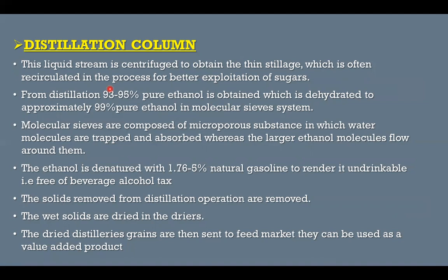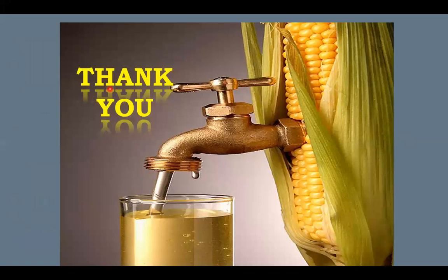This 99% pure ethanol is then denatured by adding denaturing chemicals like natural gasoline, etc., in an amount of 1.76 to 5%. The reason for adding denaturant is that after its addition, the drinkable quality becomes undrinkable, and because of that it becomes free of alcohol tax. After distillation, the solids which are removed are dried and sent to the feed market, where they can be used as a value-added product.